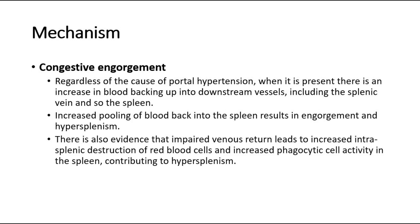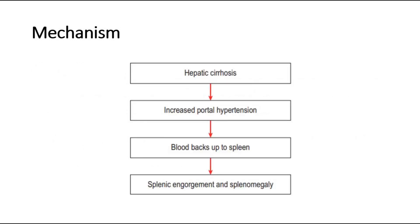Another mechanism is due to congestive engorgement. Regardless of the cause of portal hypertension, when it is present, there is an increase in blood backing up into downstream vessels, including the splenic vein and so the spleen. Increased pooling of blood back into the spleen results in engorgement and hypersplenism. There is also evidence that impaired venous return leads to increased intrasplenic destruction of red blood cells and increased phagocytic cell activity in the spleen, contributing to hypersplenism. This is the flow chart showing how liver cirrhosis leads to splenomegaly: in liver cirrhosis, there is increased portal hypertension, the blood backs up to the spleen, causing splenic engorgement and splenomegaly.